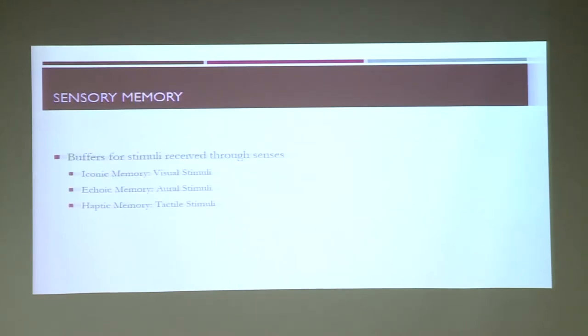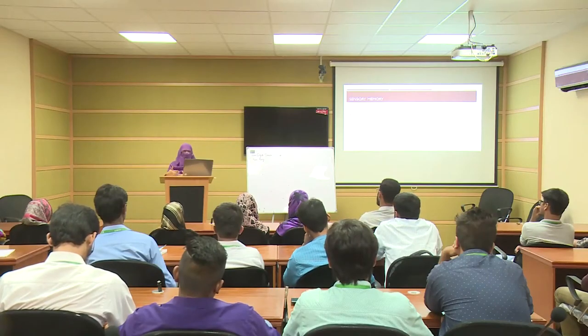Starting with our first type — sensory memory. Sensory memory acts as a buffer for stimuli received through the senses. It is divided into three parts: iconic memory, echoic memory, and haptic memory. Iconic memory relies on your visual stimuli. Whenever you see a thing, your sensory memory stores that image for around 0.5 seconds — half of a second — and then that image vanishes.